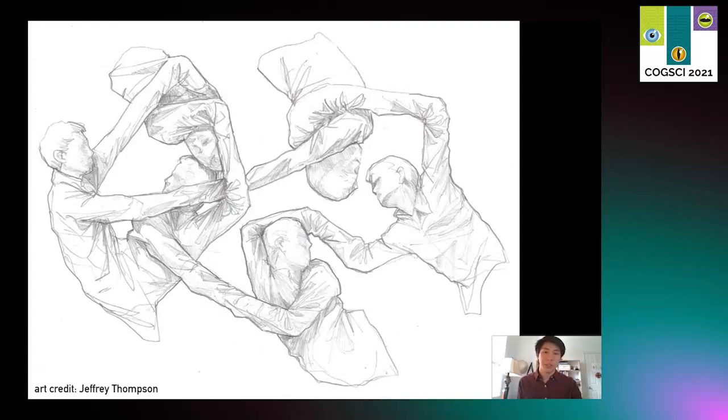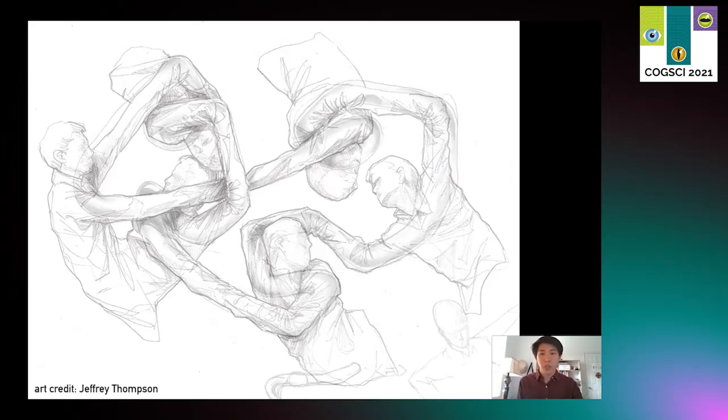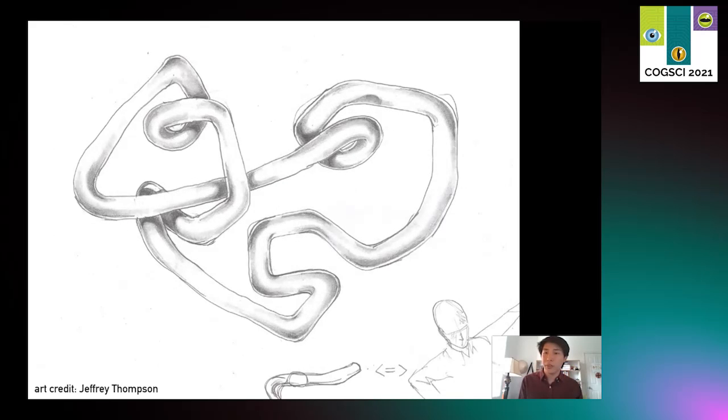Another way of answering that question is to make a picture like this, which abstracts away most of the information in the scene, such as the identities of the people, while preserving information about who is holding onto whom. Or even more extreme, a drawing like this which abstracts away the people altogether but preserves the topology of the knot they made. Both the first drawing and this one can be thought of as representing the same information, and yet they look quite different and can be useful for different purposes.